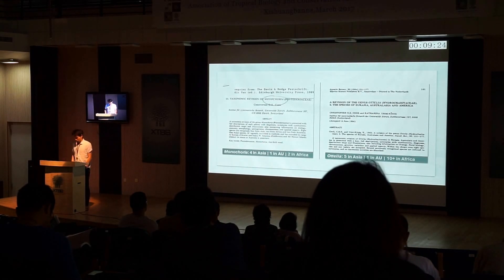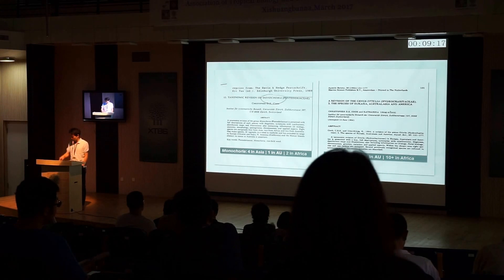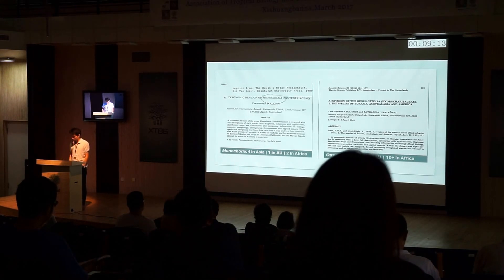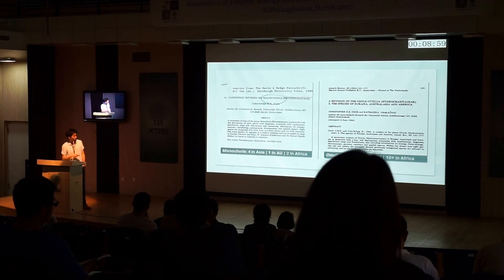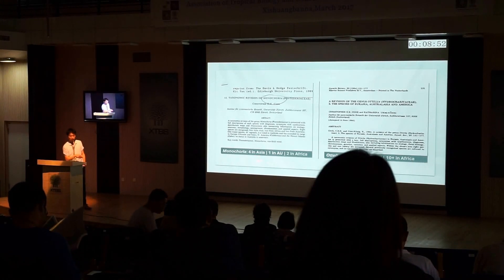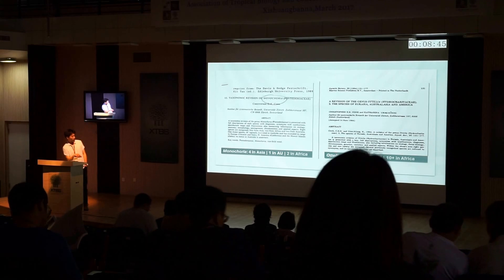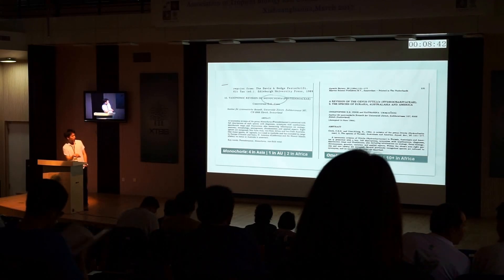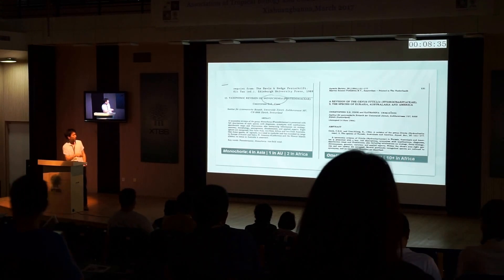We have two revision works: one by Professor Cook in 1989, and another by Professor Cook and colleagues in 1984. These are traditional morphology-based taxonomic revisions. Professor Cook said that in Monochoria, for instance, there are four species in Asia, one in Australia, and two in Africa. In our study, we find five species in Asia, one in Australia, and probably more than ten species in Africa. Today I want to focus on the Asia-Pacific species.